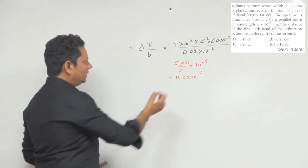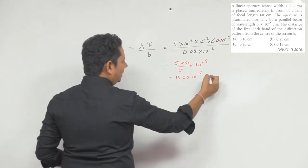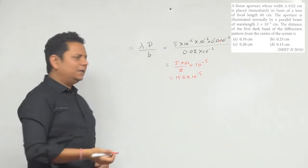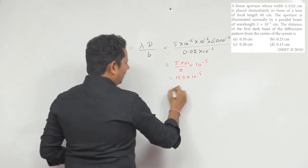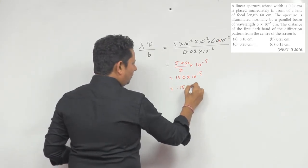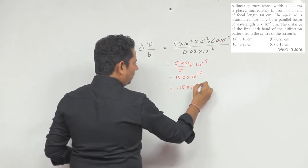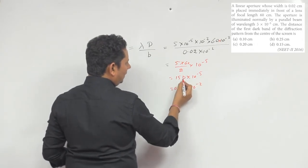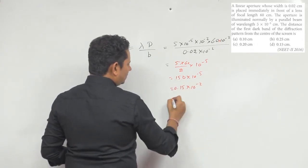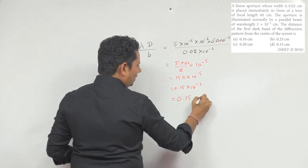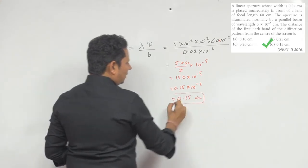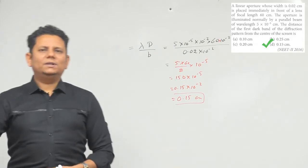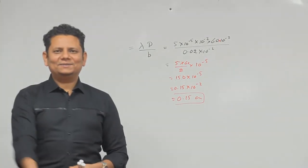Converting to centimeters (since the answer options are in cm): 150×10⁻⁵ meters = 0.15×10⁻² × 10² = 0.15 centimeter. Therefore, option D is the correct answer.